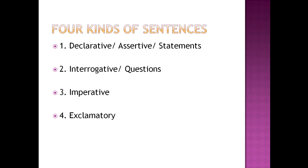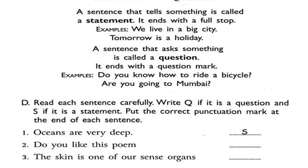Now let's have a quick recap of these four kinds of sentences. First, declarative or assertive sentence — a sentence that makes a statement or assertion. Second, interrogative sentence or question — a sentence that asks a question. Third, imperative sentence — a sentence that expresses a command, entreaty, request or order. Fourth, exclamatory sentence — a sentence that expresses strong feeling or strong emotions.